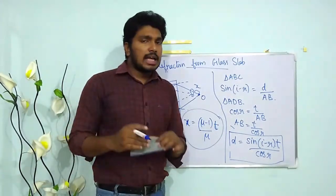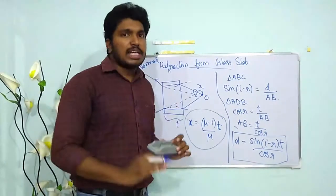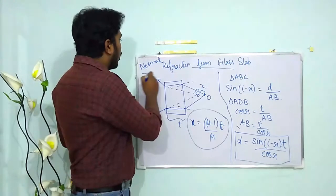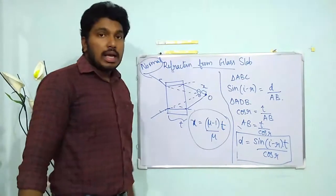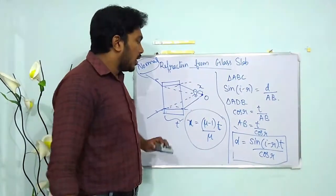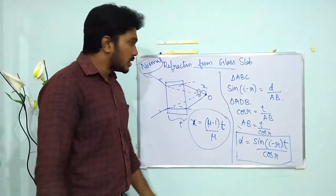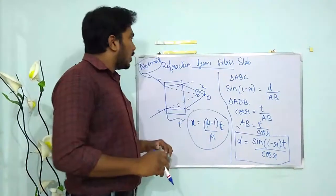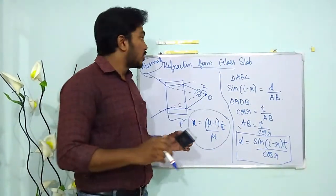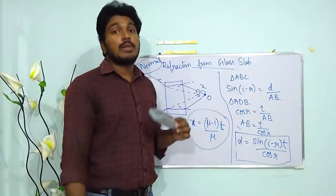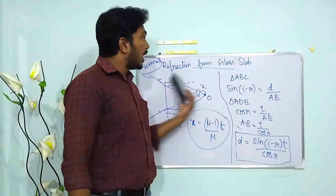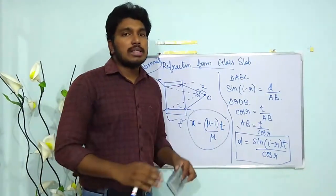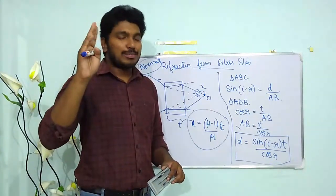So in summary: the first case covered lateral shift d = sin(i − r) · t / cos r for a glass slab with oblique incidence, and the second case gave normal shift x = (μ − 1) / μ · t. Please remember both equations. If you have any doubts, feel free to comment below. Thank you for watching Bazel Physics Classroom — have a nice day!